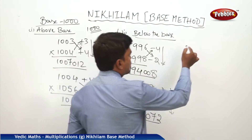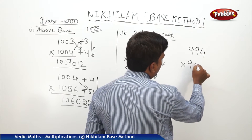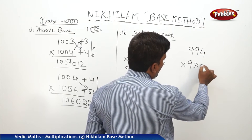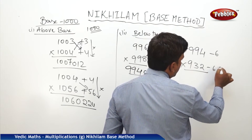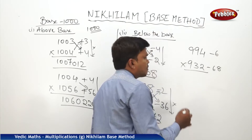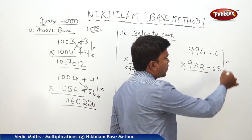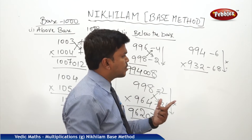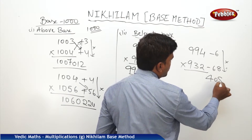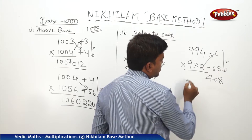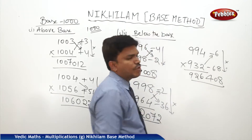One more example: 994 into 932. This is minus 6 and this is minus 68. Multiply: 6 into 68 — 360 plus 48 is 408. So the right side part is 408. And 932 minus 6 is 926. So my answer is 926, 408.